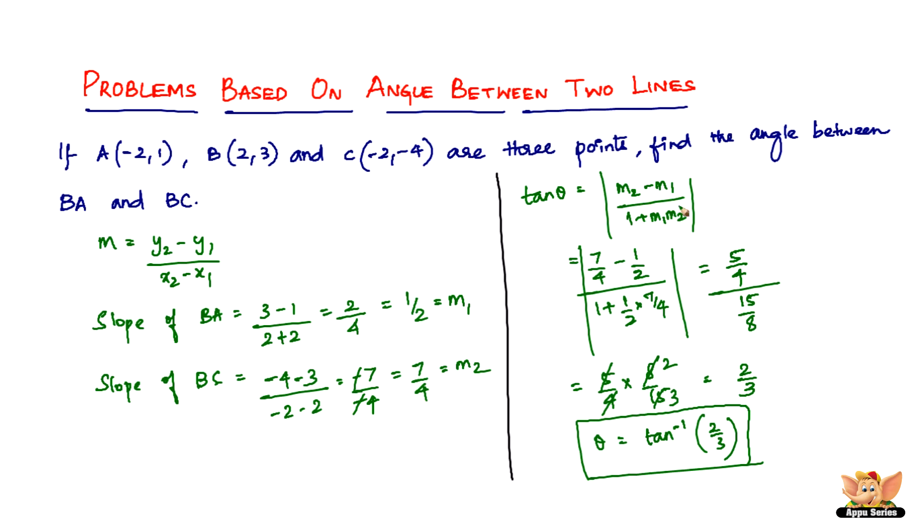Tan theta equals M2 minus M1 divided by 1 plus M1 M2. Take a mod of it to avoid the signs. So here we are, theta equals tan inverse of 2 by 3 after you substitute the M1 and M2. So that concludes this video. I will see you in the following videos with more concepts based on straight lines.